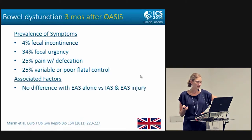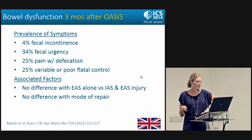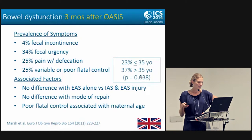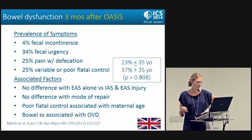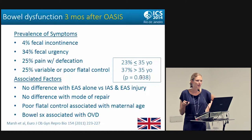Regarding factors associated with these symptoms: there was no difference in symptoms with external anal sphincter injury alone versus internal plus external injury, and no difference with mode of repair — overlapping versus end-to-end — consistent with findings in many other studies. Poor flatal control was associated with advanced maternal age; women 35 or older had a much higher risk of poor flatal control. Bowel symptoms were generally associated with operative vaginal delivery, suggesting it's not just the sphincter injury but the delivery context that matters.